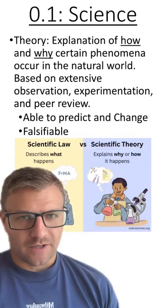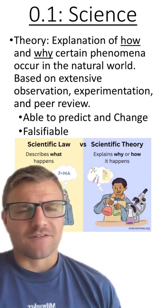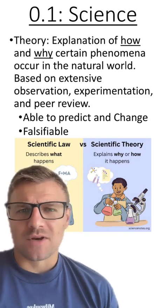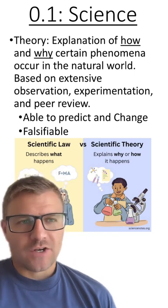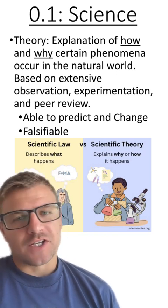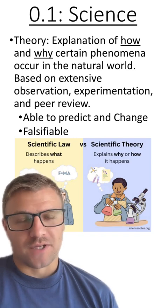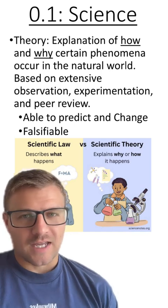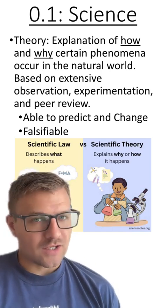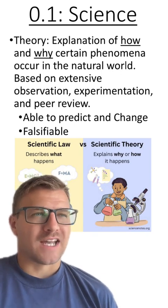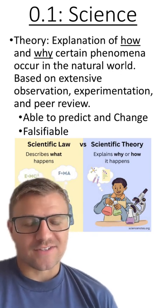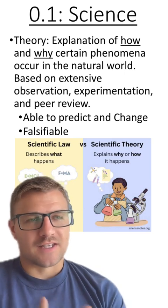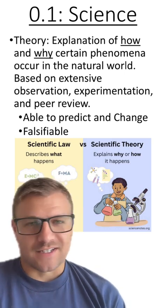Next, we have something called a theory. A theory is an explanation of how or why certain phenomena occur in the natural world. Theories are based on extensive observation, experimentation, and something called the peer review process. Something that's really important for people to understand is that theories can and often do change. And that goes against what people kind of perceive science as. I think the perception of science from society is that science is unchanging. And that's not the case.